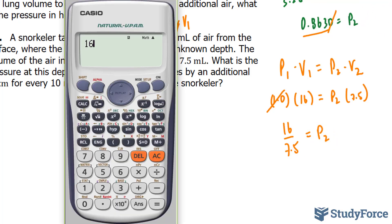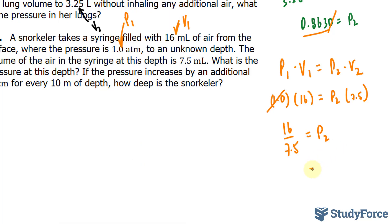Using our calculator, 16 divided by 7.5 is equal to 2.13, and that 3 is repeating, 2.13. And the units here are atmospheres.